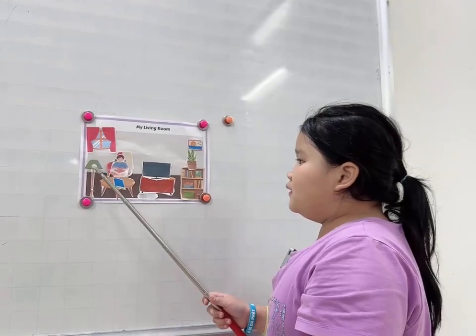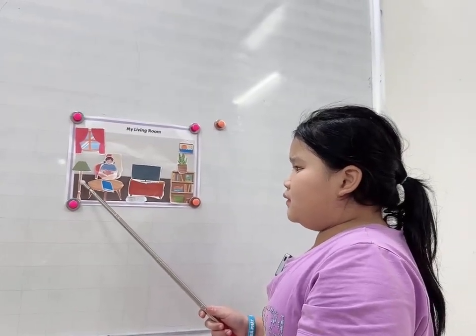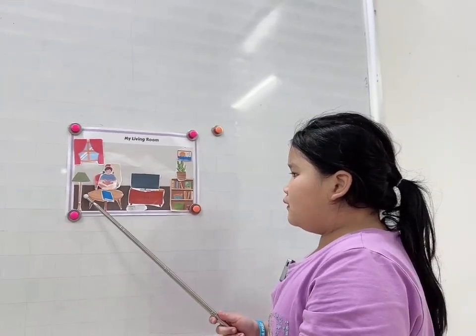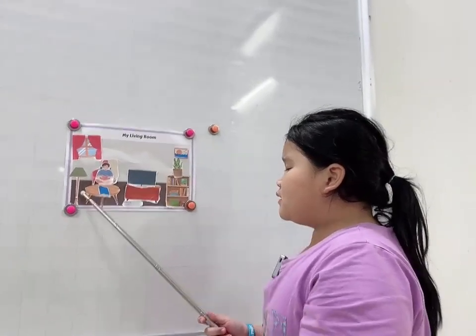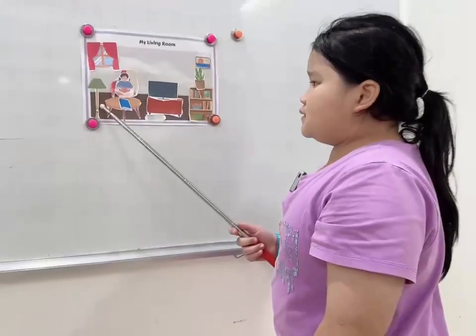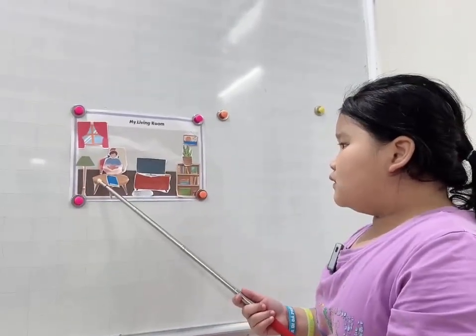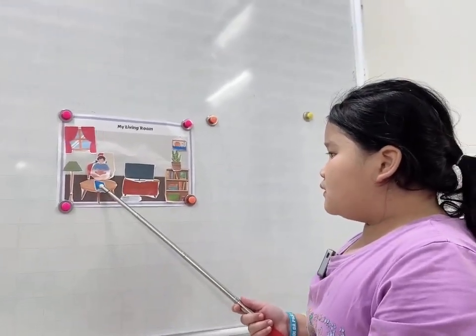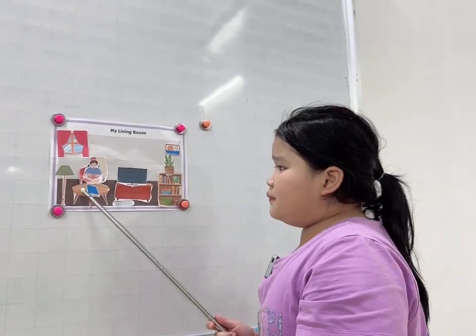This is a lamp. The lamp is next to the table. The book on the table.